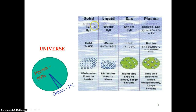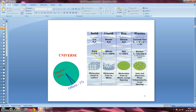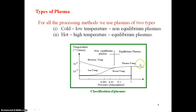Here we have examples of conversion of water from solid state into liquid state and then into gaseous state as temperature increases. Finally, when we apply some voltage, the water molecule is ionized. So we have four states of matter: solid state, liquid state, gaseous state, and the plasma state.